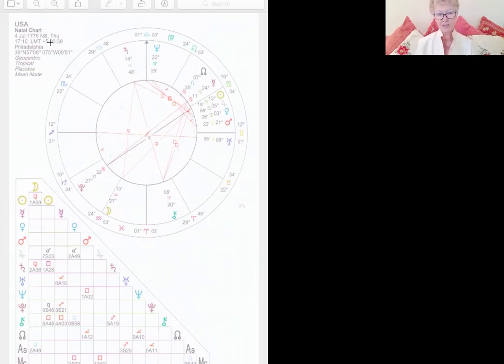So in this chart for the US, Pluto falls in this second house at 27 of Capricorn. The second house here is the country's economy, finances, but also the country's values. This is what I'm going to be focused on here, Pluto at 27 of Capricorn, linked to the country's economy, finances, but also the country's values.